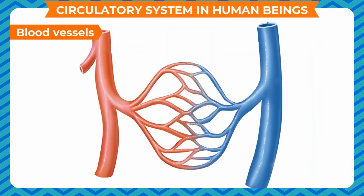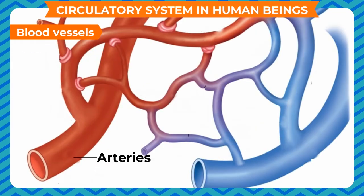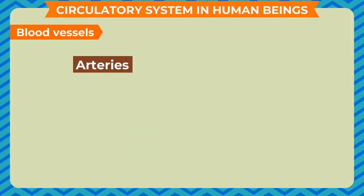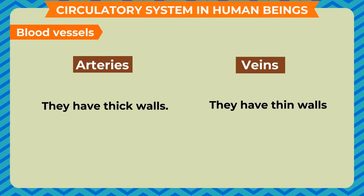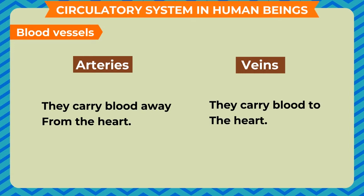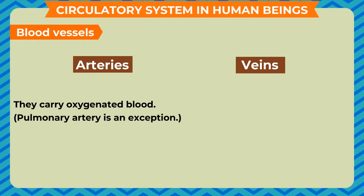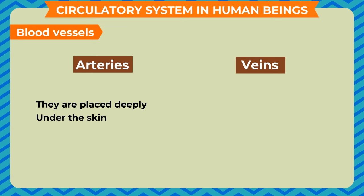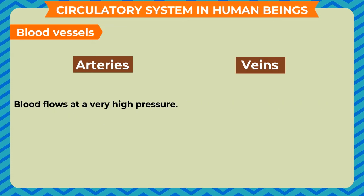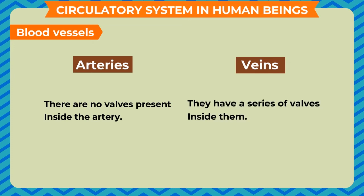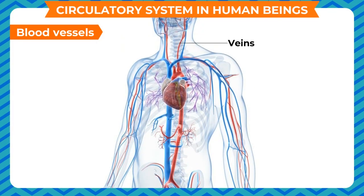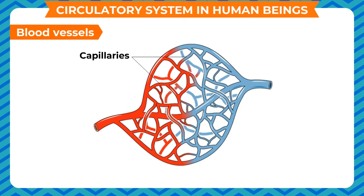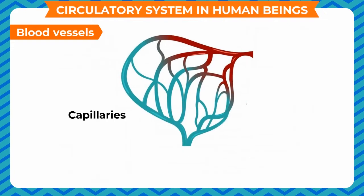Blood vessels are of three types: arteries, veins and capillaries. Arteries carry blood from the heart to various parts of the body; they have thick walls, carry blood away from the heart, carry oxygenated blood (the pulmonary artery is an exception), are placed deeply under the skin, and blood flows at very high pressure with no valves inside. Veins have thin walls, carry blood to the heart, carry deoxygenated blood (the pulmonary vein is an exception), are placed superficially, blood flows at comparatively low pressure, and they have a series of valves. Capillaries are very thin blood vessels forming a network between arteries and veins, so thin that diffusion of gases and chemical substances easily takes place through them.